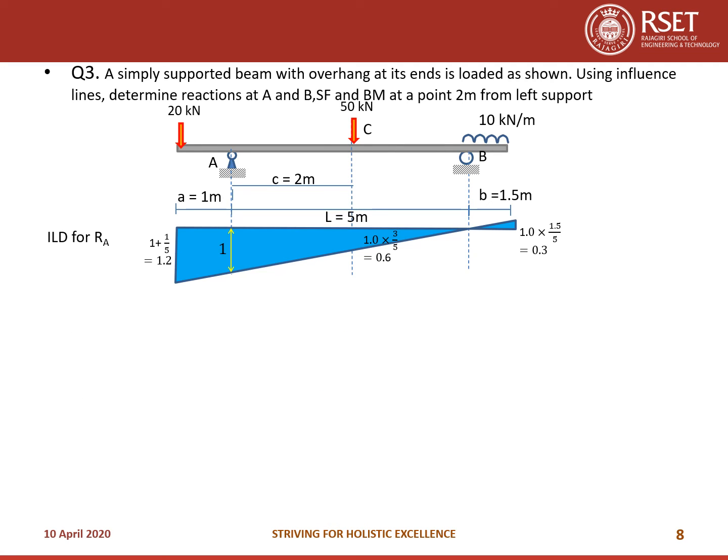The reaction Va = −20×1.2 + 50×0.6 + 10×(½×1.5×0.3). The 20 kN load gives a negative contribution because its ordinate is on the downward side, while the 50 kN is positive at 0.6, and the 10 kN/m UDL acts over a triangular area above the baseline. This gives Va = −51.75 kN.